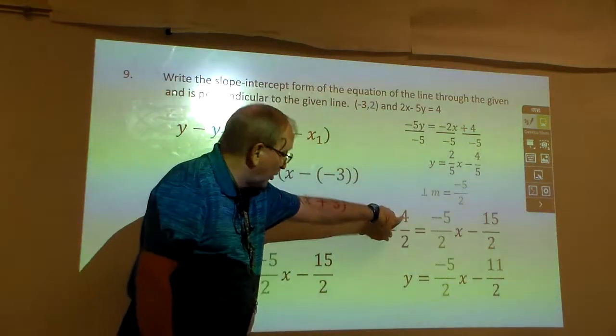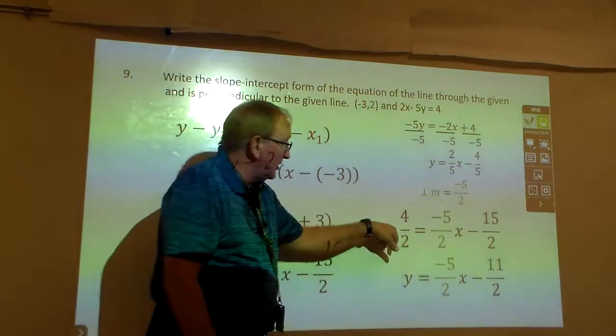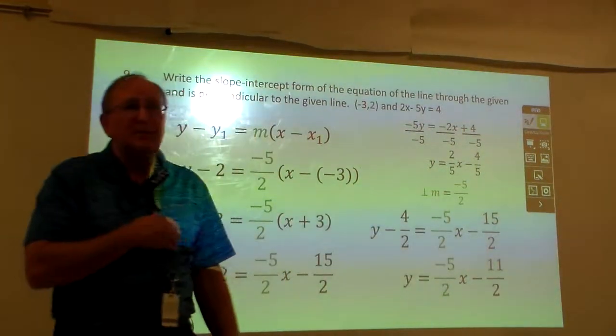I'm going to make that 4 over 2, which is the same as 2. And to get rid of that I'm going to add 4, that's how I'm going to end up with that number right there.